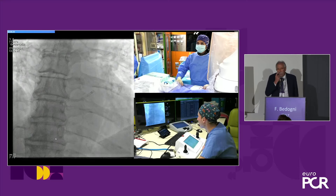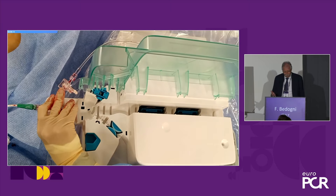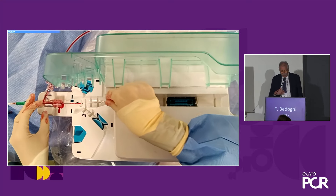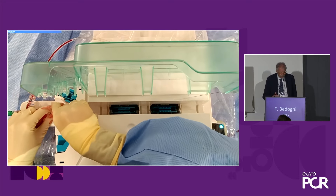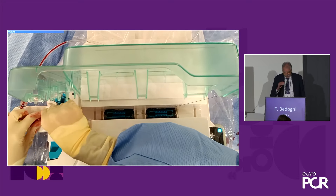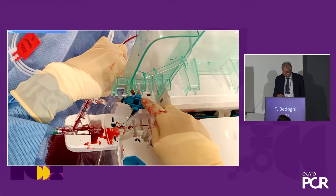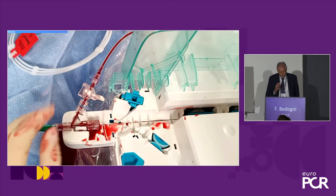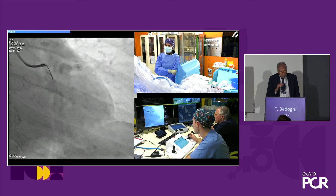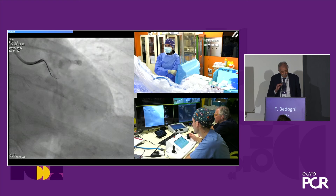The procedure is performed by two very young operators — one young operator and one fellow. The fellow is inside, the only person inside the cath lab, protected by the screen, and all the other people are outside. She is loading the J-connector into the robot machine, which is the main working path for wire and balloon, and there is a standby path. We started with a normal right radial access.